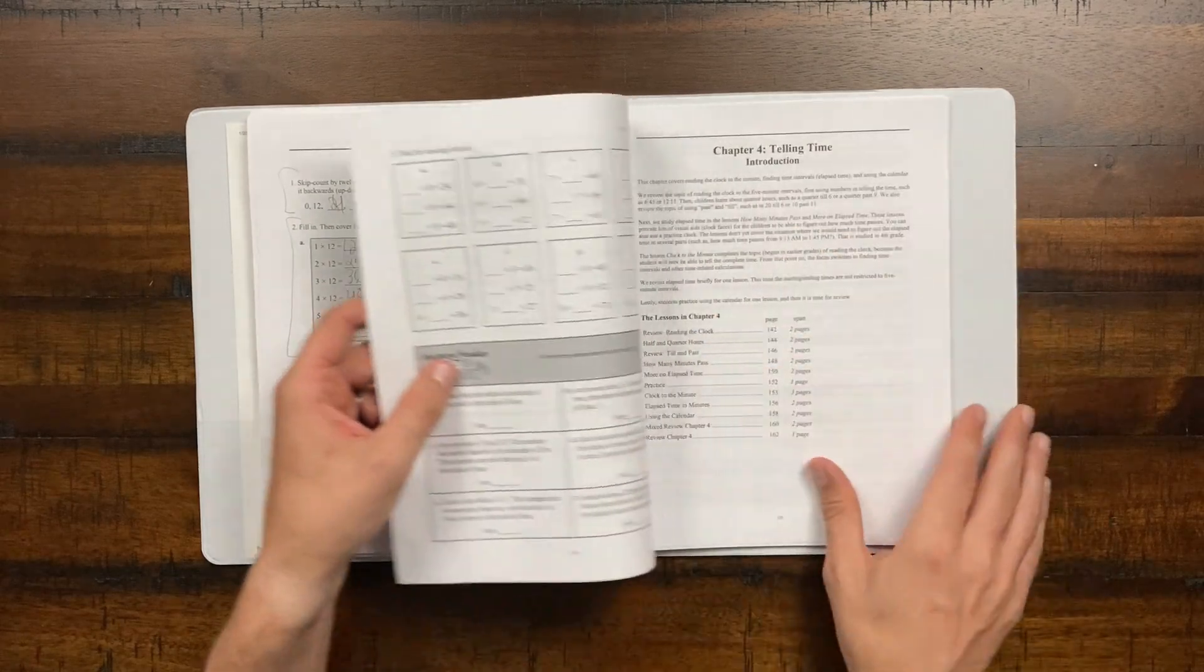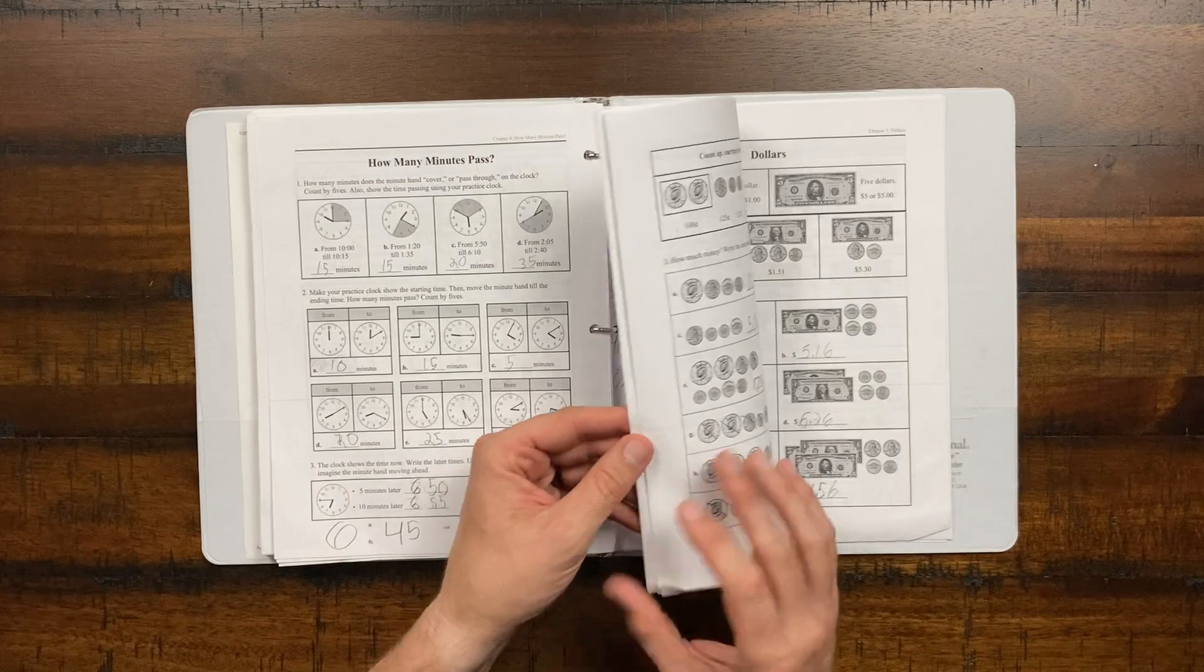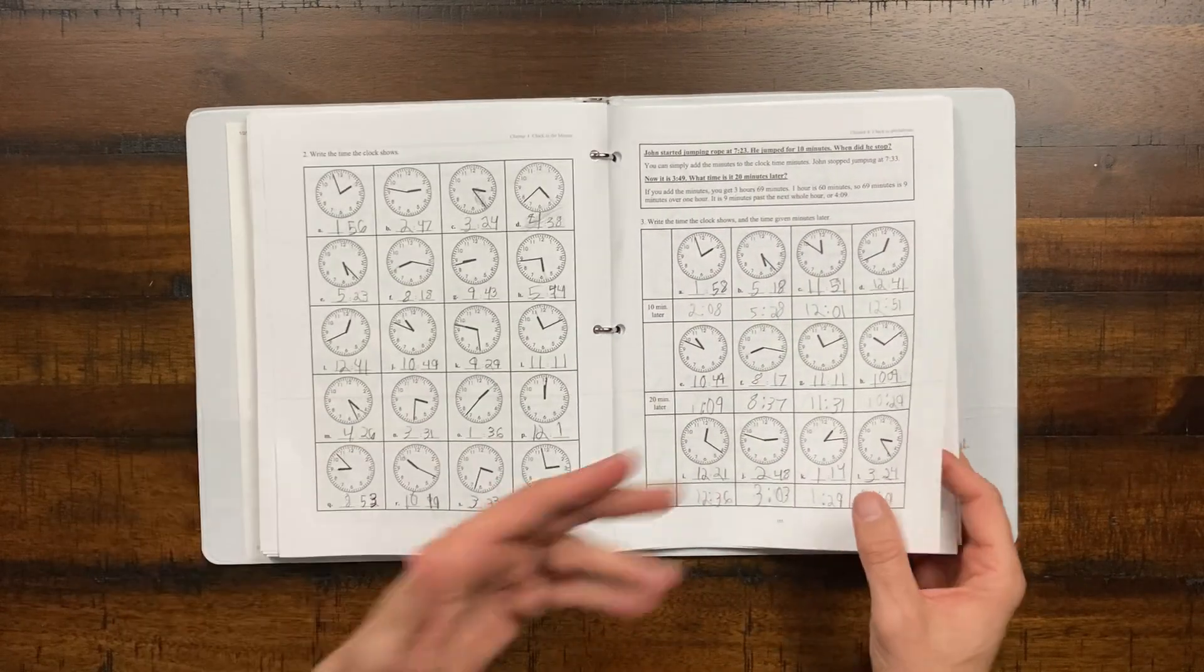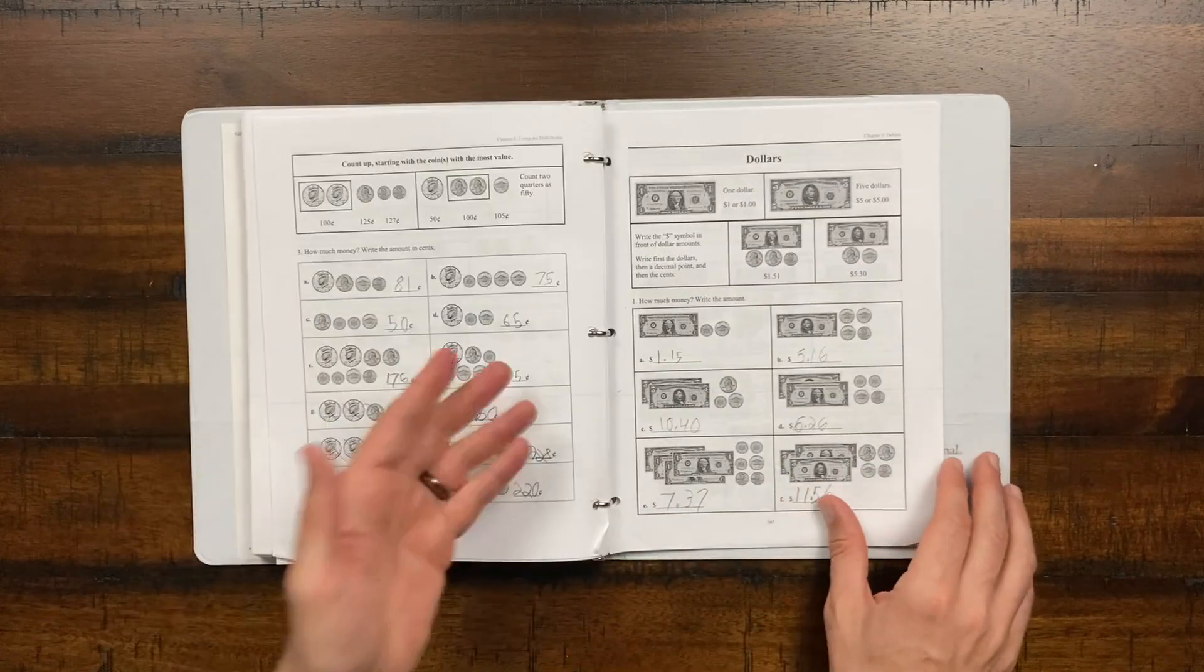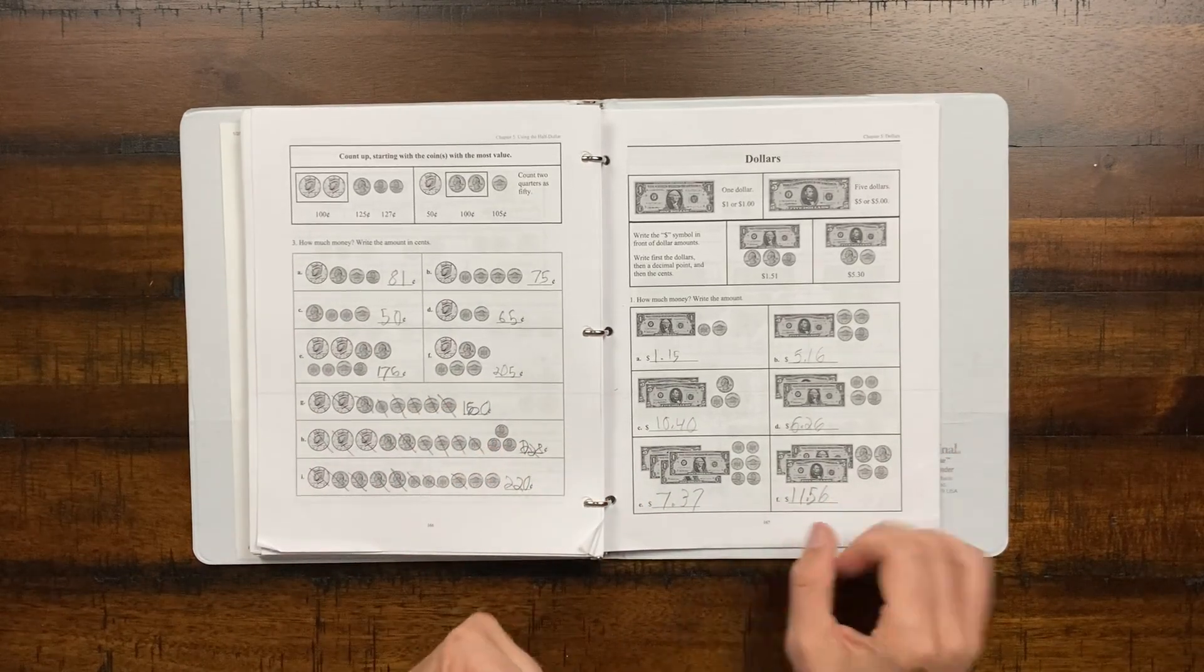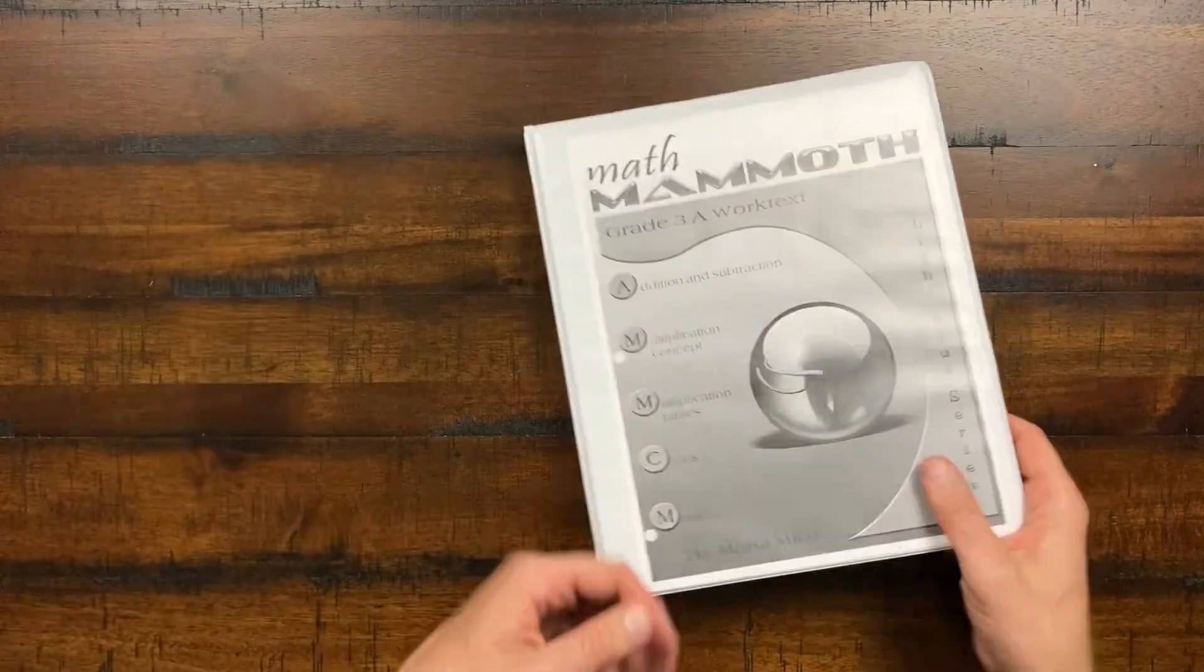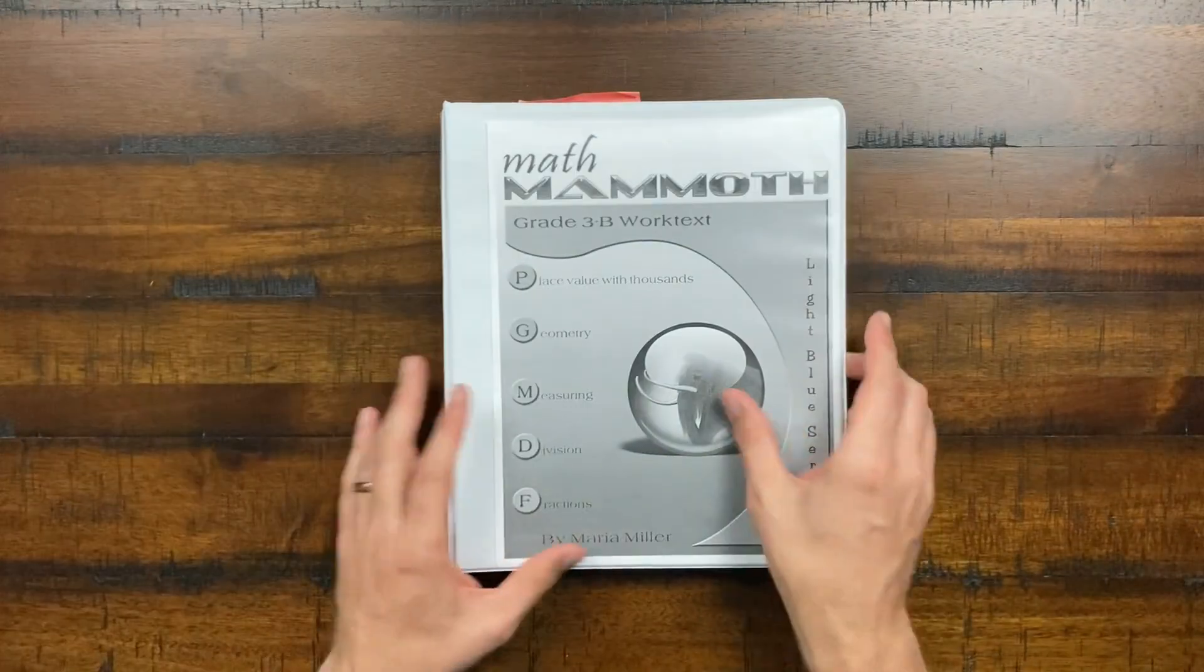Again, 11s and 12s we did here came back into telling time, but my daughter kind of has a good understanding of time now. So I just had her kind of breeze through this section. Money was actually fairly straightforward. Again, my child's finally gotten a good handle on money. So these sections were actually fairly quick and I'll go ahead and hop into book two, where we talk a little bit more about place value and geometry.